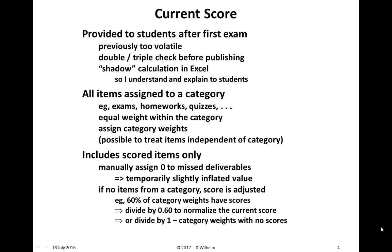All items need to be assigned to a category to calculate the current score — for instance, an exam category, homework, quizzes, perhaps discussion board, perhaps Connect LearnSmart, perhaps Connect multiple choice quizzes, whichever are included in the course. Within the category, each deliverable has equal weight, so all exams count the same as the other exams, all homeworks as the other homeworks, and so forth. Then assign category weights — typically exams have a higher category weight than others, but these are at the choice of the instructor. It is possible to treat individual items rather than categories, but that's a lot of extra work and somewhat prone to error, so I like to stick to the categories.